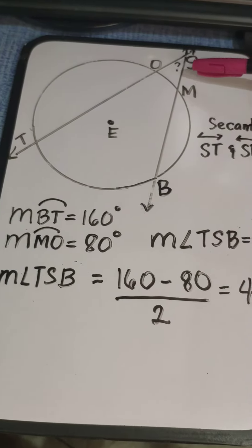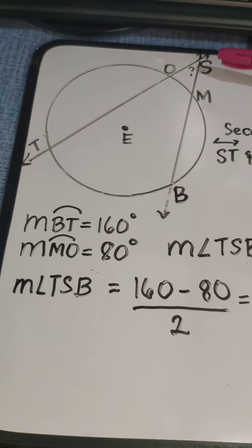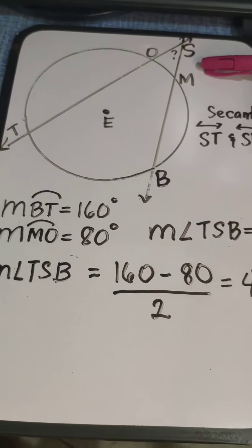Now in order to find the measure of angle TSB or angle BST, or the angle formed outside the circle, we are going to use the theorem.